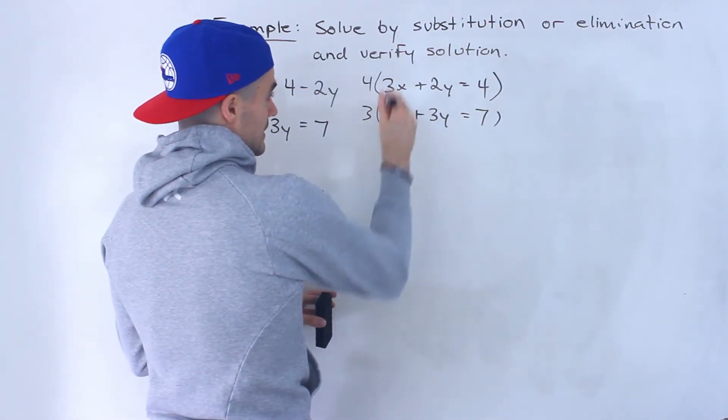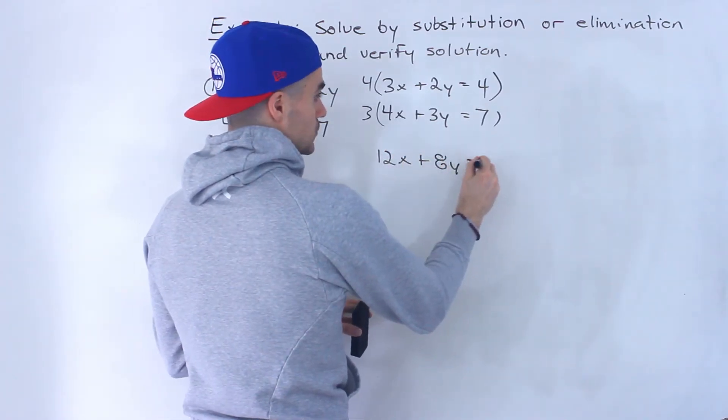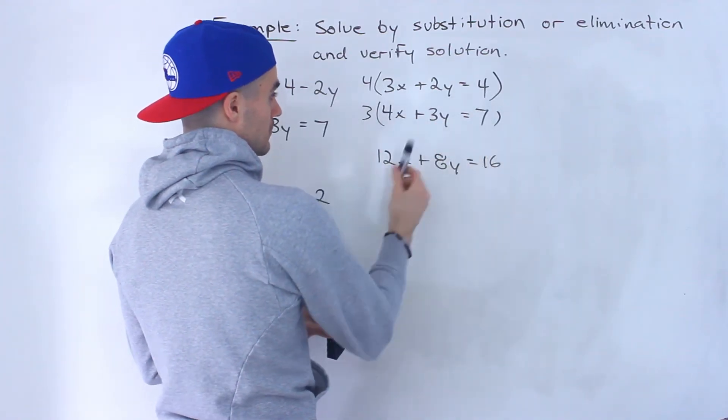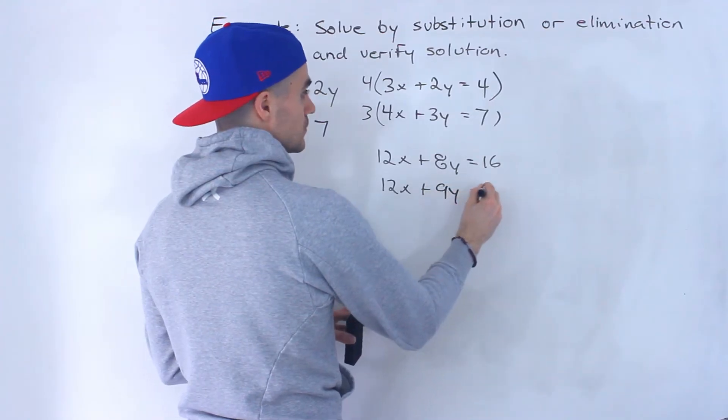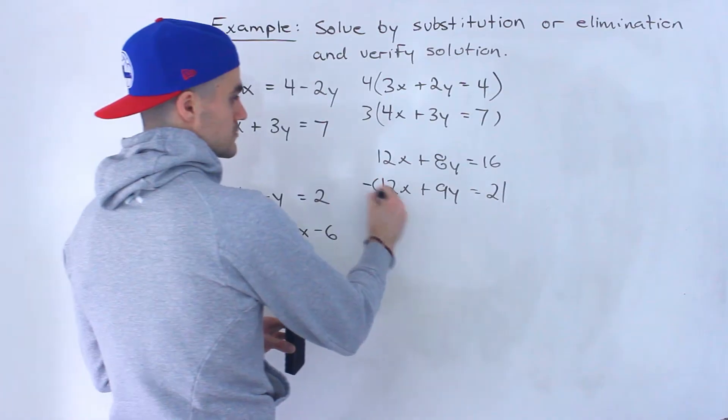So this line here would become 12x plus 8y equals 16. We got to multiply everything by 4 then we got to multiply everything by 3 so this would be 12x plus 9y equals 21.